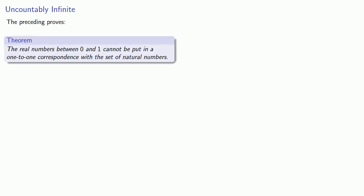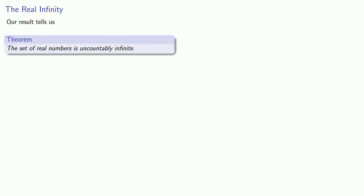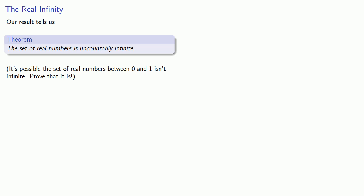The preceding proves a very important theorem: the real numbers between 0 and 1 cannot be put in a one-to-one correspondence with the natural numbers. This leads to a new definition: an infinite set that cannot be put in a one-to-one correspondence with the natural numbers is uncountably infinite. Since the real numbers between 0 and 1 are a subset of all real numbers, the set of real numbers is uncountably infinite — though we do need to establish that we're dealing with an infinite set.